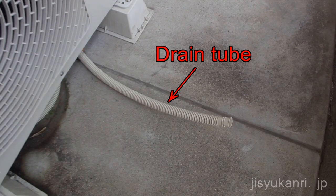The cause of water leakage is the air conditioner's internal drain hose. It is a method to soak up the dirt with a vacuum cleaner. Let the work be done so as not to break the vacuum cleaner.